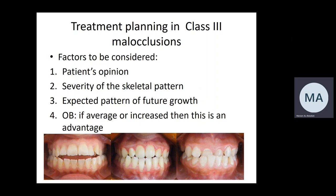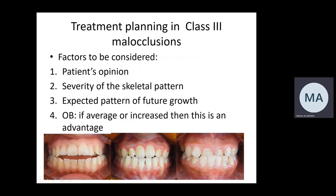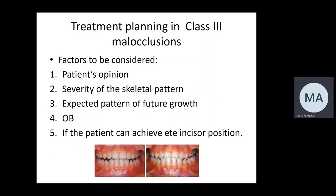Future growth must also be considered: if the patient is still growing, this affects planning in both the AP and vertical dimensions, taking into account age, gender, existing facial pattern, and family history. When uncertain, expect the worst-case growth scenario. Overbite is extremely important in treatment planning for class three malocclusion because it affects end-of-treatment stability — average to increased overbite enhances stability and reduces relapse. It is also important to check if the patient can achieve edge to edge, which indicates pseudo class three and a more favorable prognosis.